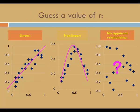Let's see if we can guess a value of R based on a scatter plot. In the scatter plot on the left, we see a linear association. The direction is positive, so R should be positive. The linear association is strong, so I expect a value between 0.7 and 1 — if I had to guess, I might say 0.8. The graph in the center shows a non-linear association. Remember that R is a measure of linear association, so for the center scatter plot, I would guess a value of R close to 0. Since there is no apparent relationship in the third scatter plot, again I would guess a value of R close to 0.